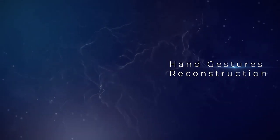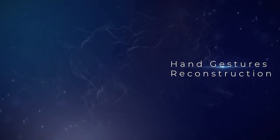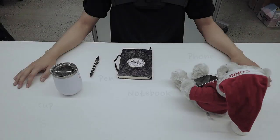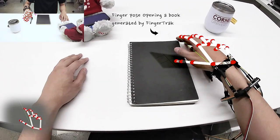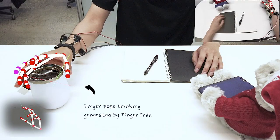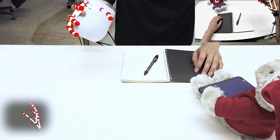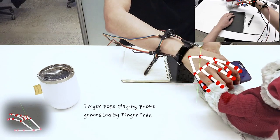The smart wristband can also reconstruct hand poses in real-life scenarios. When people are wearing the wristband, hand poses in daily activities like opening a book, drinking, and grabbing a phone can be estimated. Let's see.